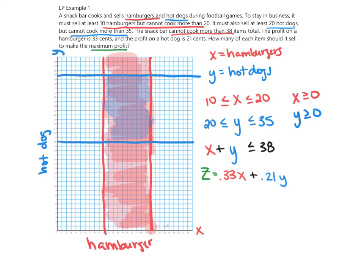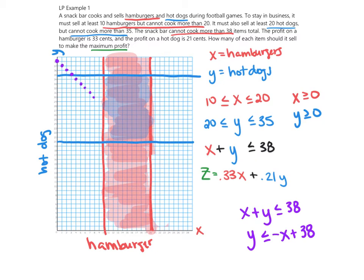For X plus Y less than or equal to 38, we need to turn this into slope-intercept form to graph it. Moving X over gives Y less than or equal to negative X plus 38, where the y-intercept is 38 and the slope is negative 1. We plot this line and shade below it. You can see the intersections occurring, and this defines the shaded feasible region.